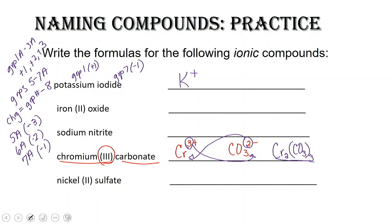So for groups 1A through 3A, the group number is the positive charge. For groups 5A through 7A, it's group number minus eight to give you the charge. Iodine is in group 7, so it's got a minus one charge. If I put one of each of these ions together, it'll be neutral. So that compound is KI.